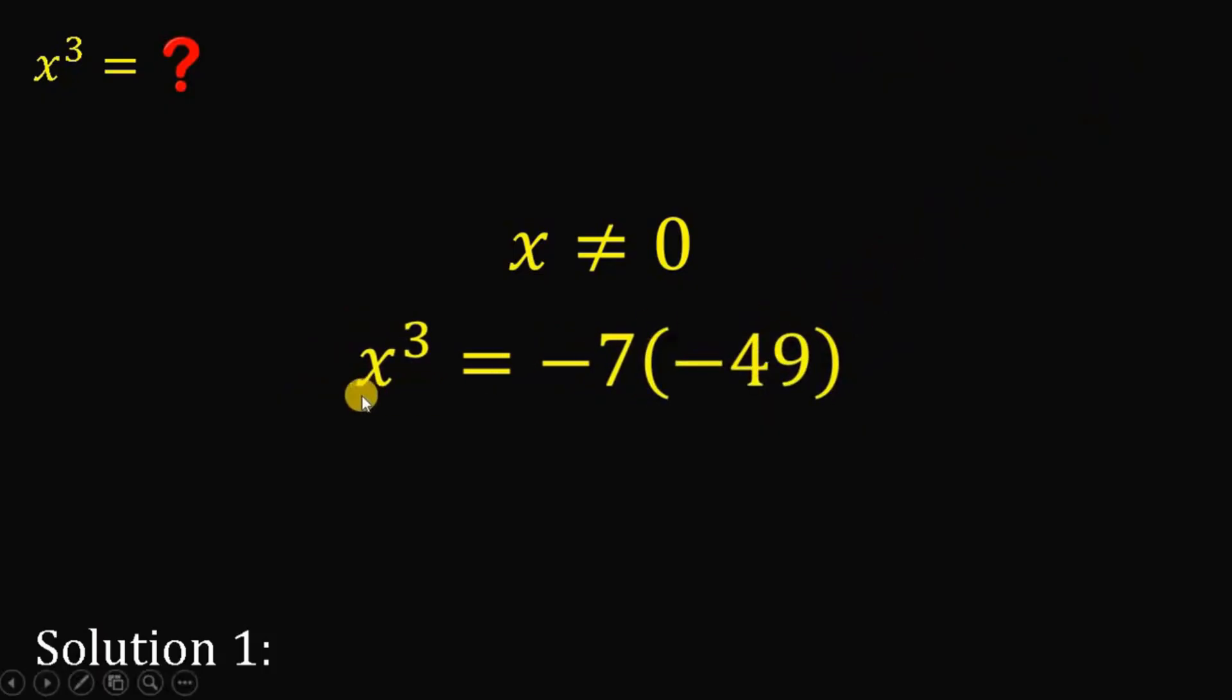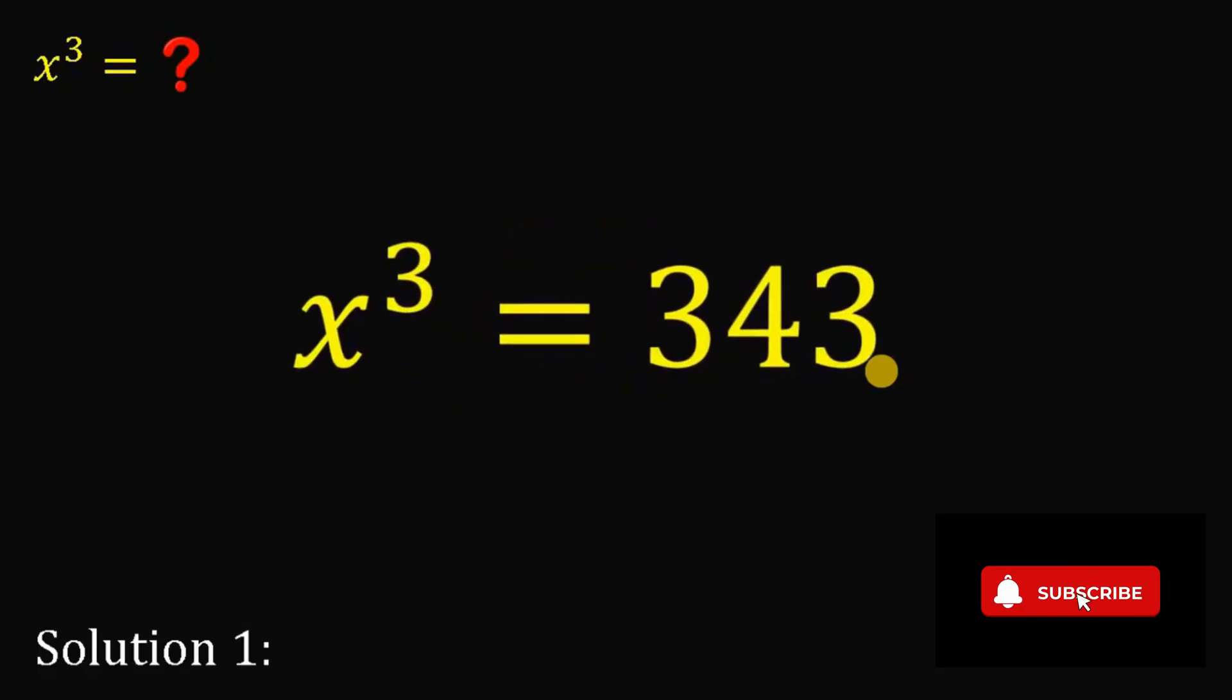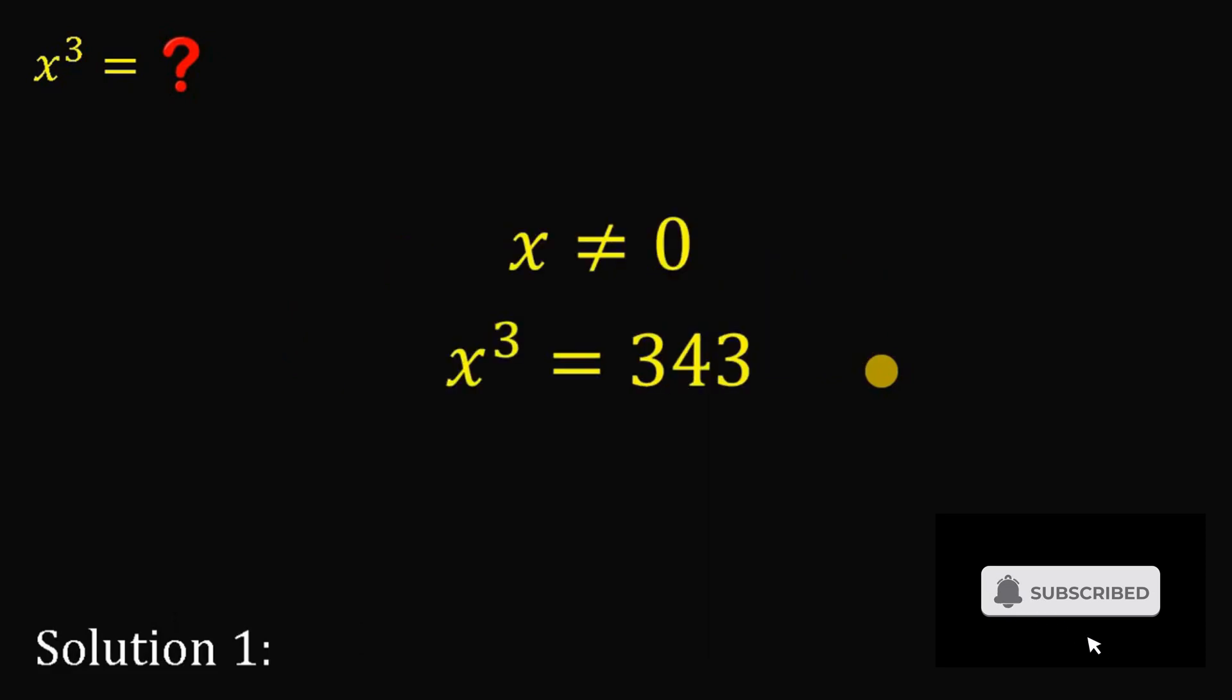So, we have now x cubed is equal to negative 7 times negative 49. And negative 7 times negative 49 is simply 343. Therefore, using our first solution, we get that x cubed is simply equal to 343. Now, for using our first solution, we get that x cubed.